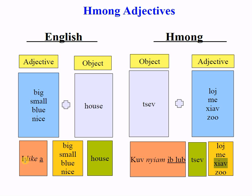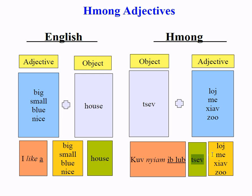That would be translated into English as 'I like a blue house.' Again, big, small, blue, nice house is translated into Hmong as: J law, J may, J sia, J zhong — like that.